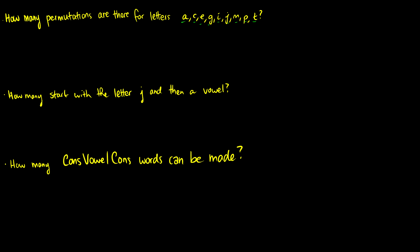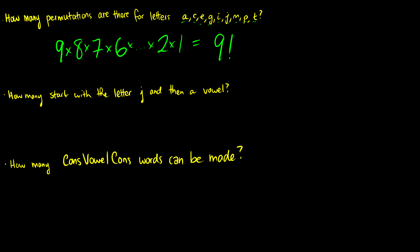So this means that we have 9 choices for the first letter, 8 choices for the second letter, 7 choices for the third, 6 for the fourth, and this goes all the way down to 2 and 1. So this is just equal to 9 factorial. We pick the first letter, the second, the third — we can only use each one once.